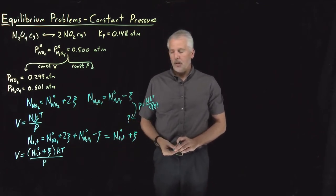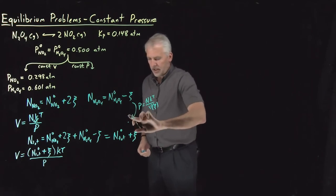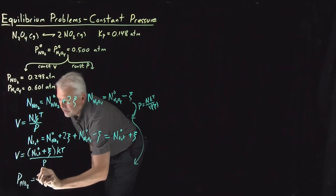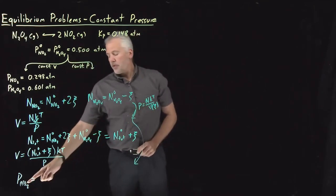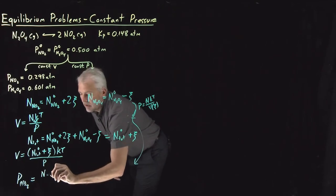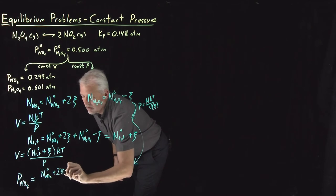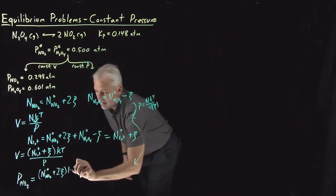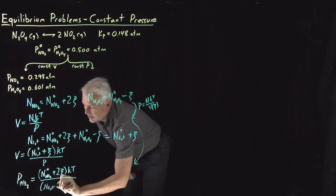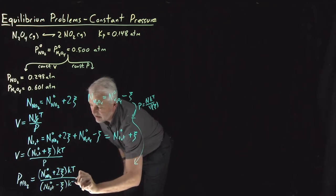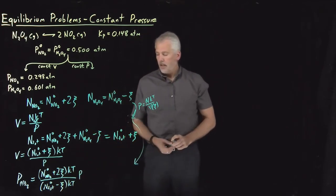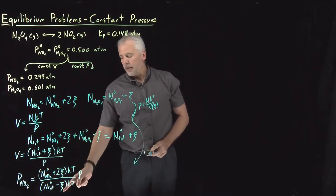Now let's convert molecules of NO2 to partial pressure of NO2, and molecules of N2O4 to partial pressure of N2O4. When I multiply by KT over V, the partial pressure of NO2 is molecules of NO2 times KT divided by this volume. So it's going to be molecules of NO2 initial plus two squiggle times KT, divided by N_total initial plus squiggle times KT, with the denominator's P moving up to the top. That's an expression for the partial pressure of NO2 and how it depends on the extent of reaction.